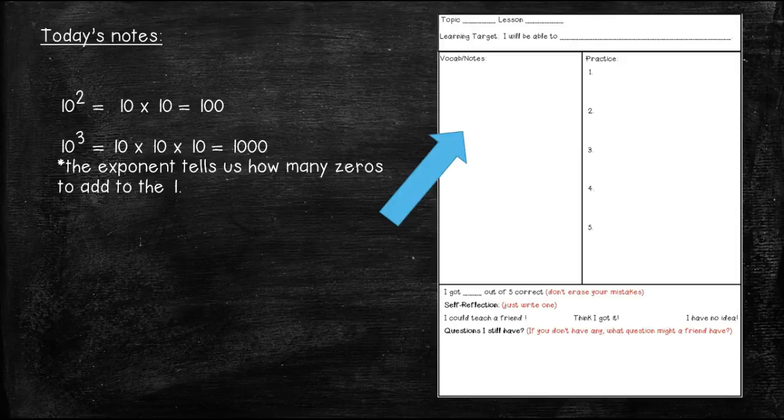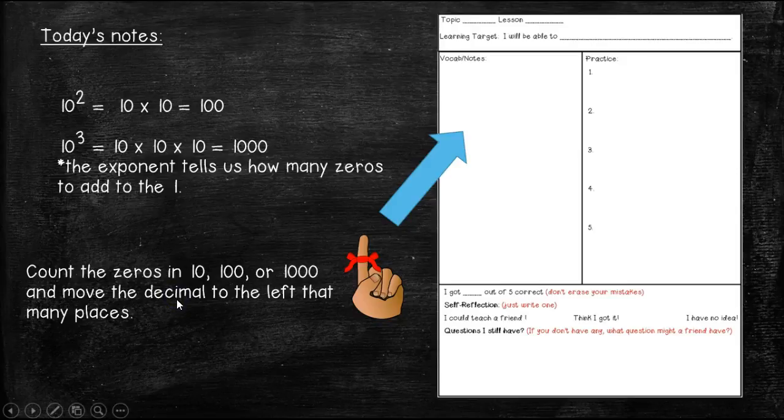Here are a couple notes that I think are really important for you to understand today's concept. First of all, 10 to the second equals 10 times 10, which equals 100. It does not equal 10 times 2. Remember, we're talking about exponents here, so 10 to the third would actually equal 10 times 10 times 10, which equals 1000. Remember, the exponent tells us how many zeros to add to that one. Another important thing for you to remember and write down today is to count the zeros in 10, 100, or 1000, and then move the decimal to the left that many places. Yes, it is that easy.